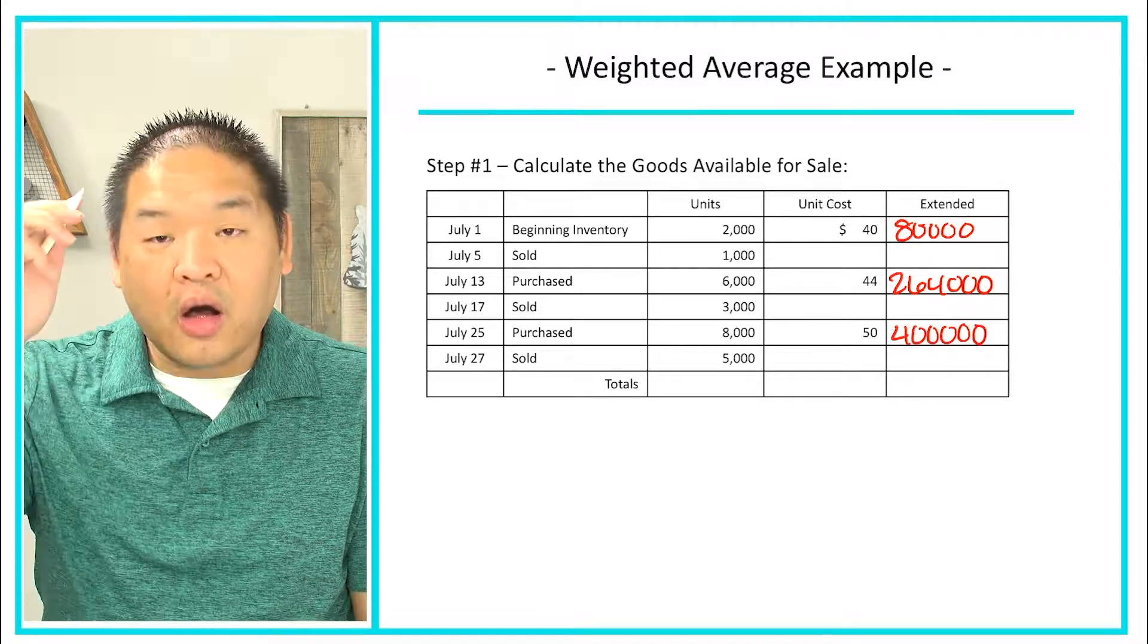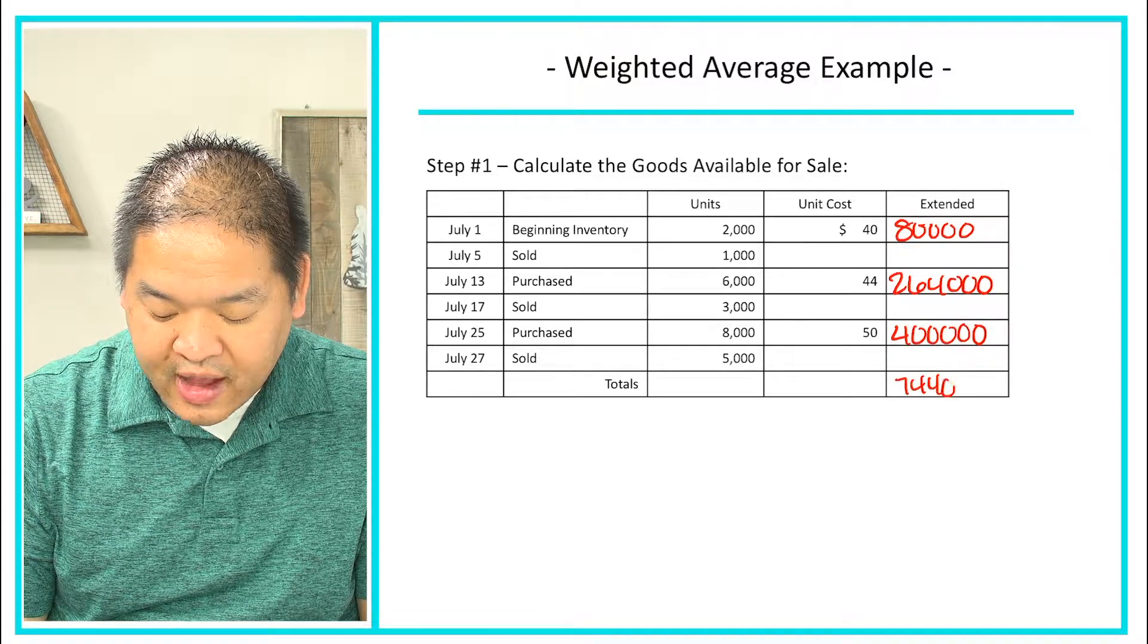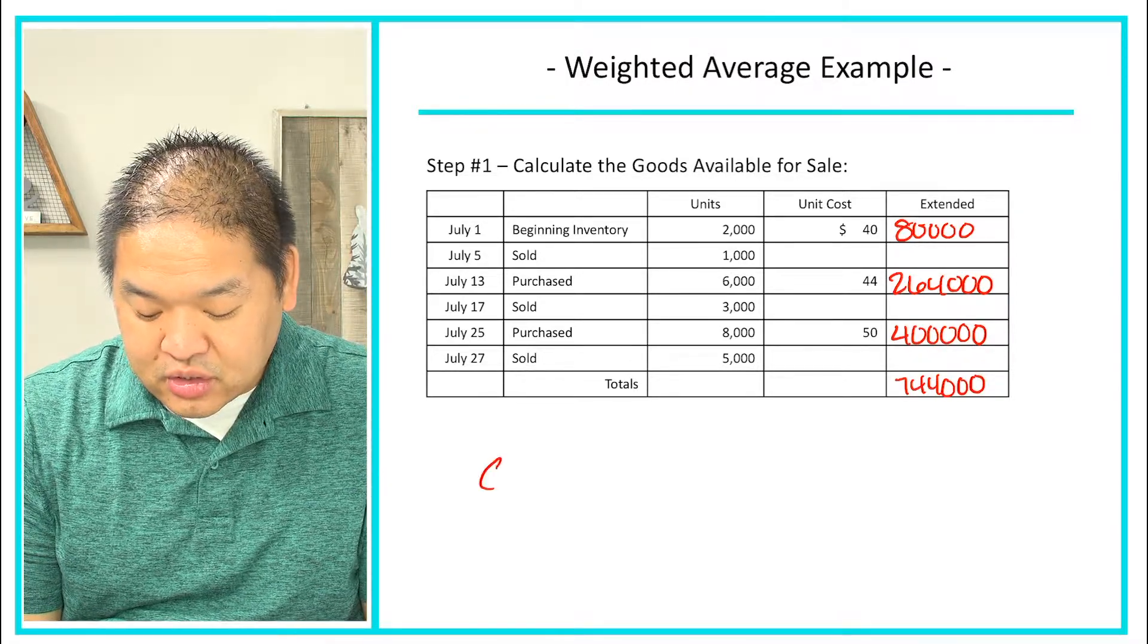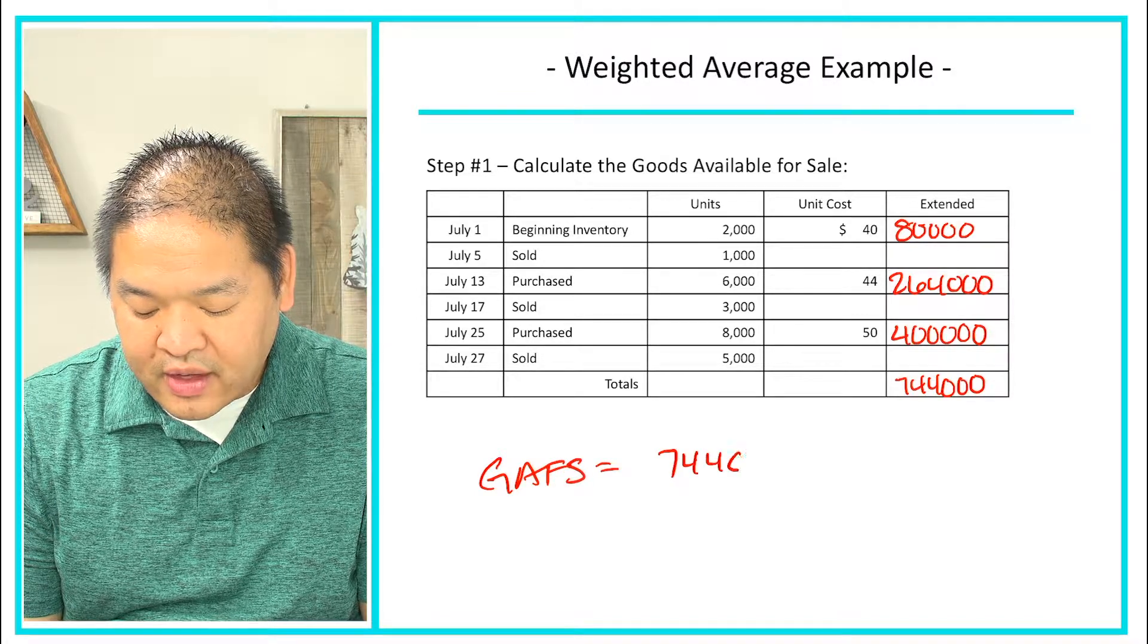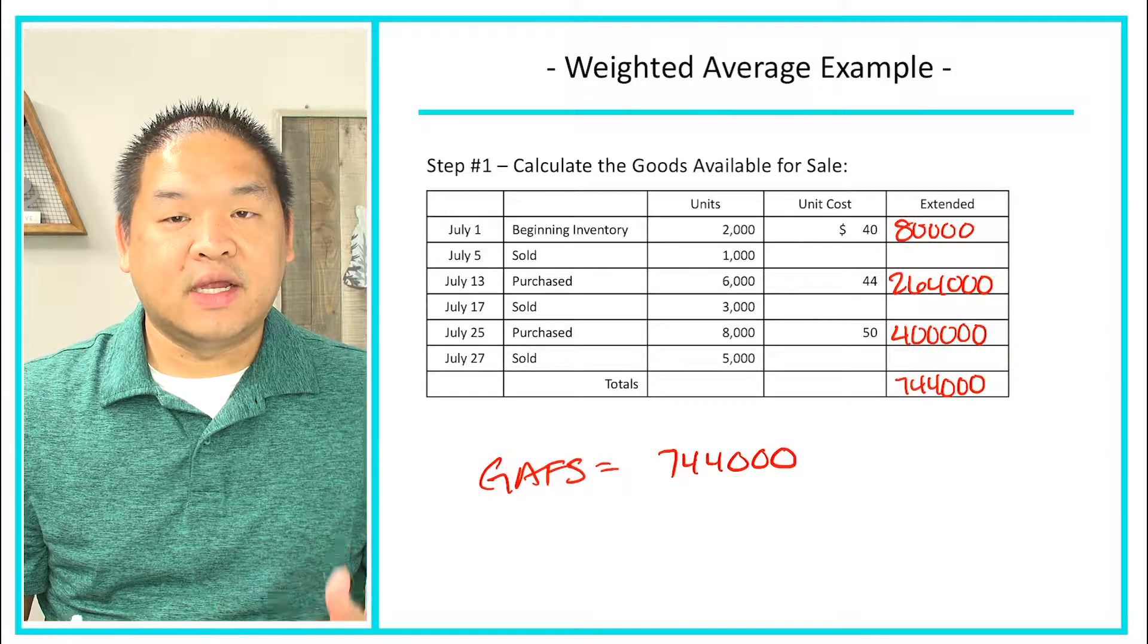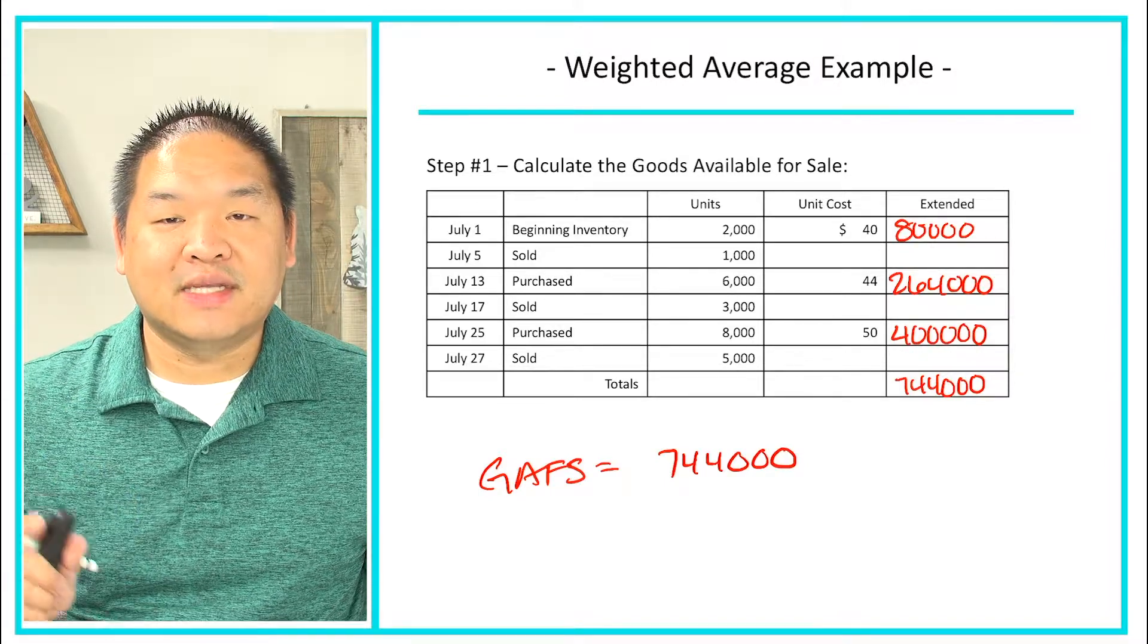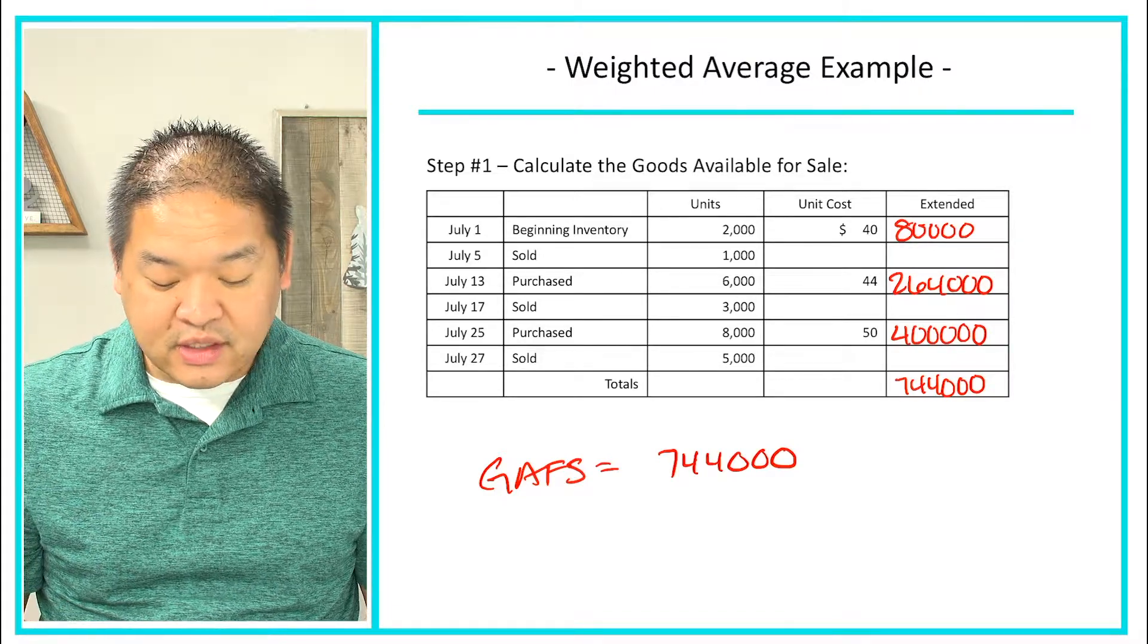So if I add up all three of those numbers I get $744,000. So our goods available for sale equals $744,000. And again that's one of the answers that we need, but that's also what we're going to be using to calculate ending inventory. So goods available for sale, $744,000.